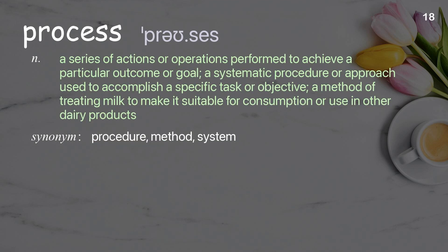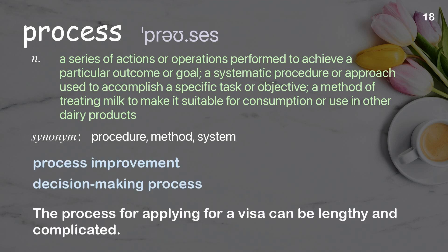Process: a series of actions or operations performed to achieve a particular outcome or goal; a systematic procedure or approach used to accomplish a specific task or objective; a method of treating milk to make it suitable for consumption. Examples: process improvement; decision-making process. The process for applying for a visa can be lengthy and complicated.